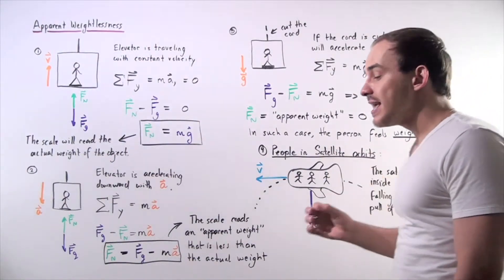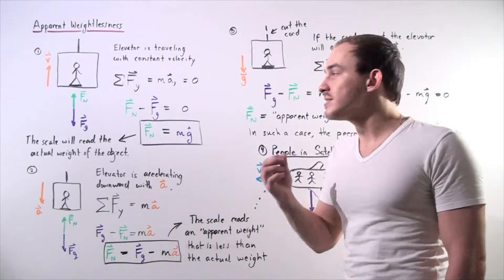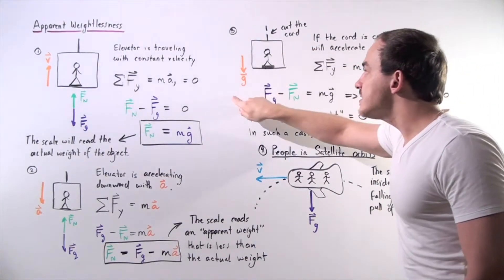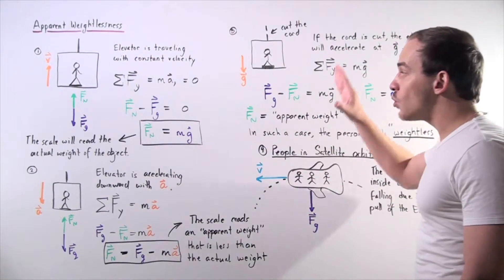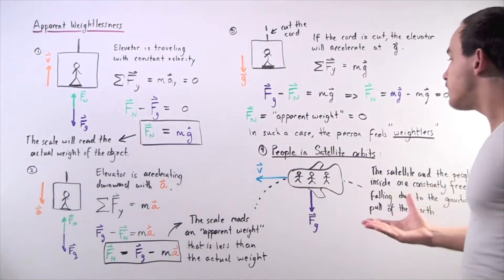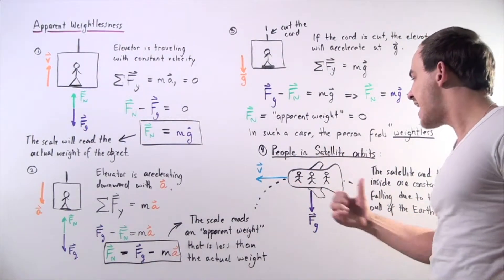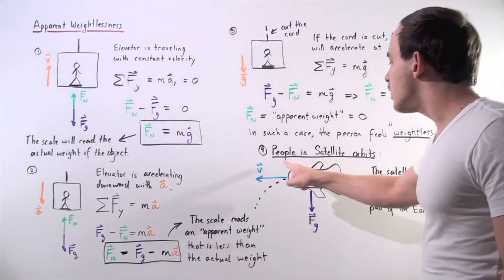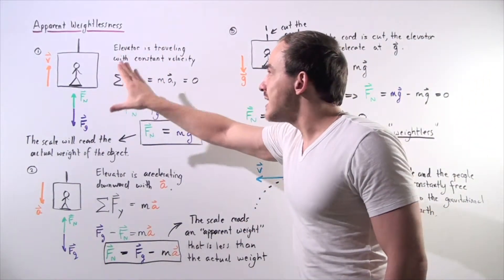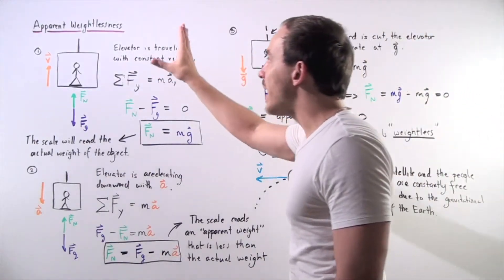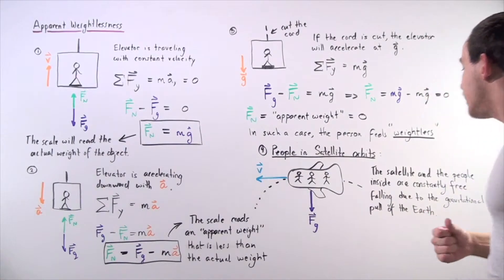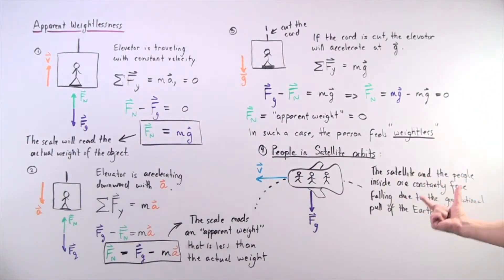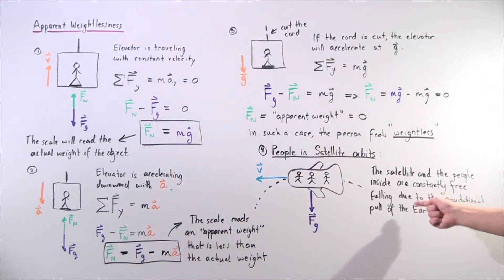What is actually taking place is that the gravitational pull is still there. Because gravity is still present, it is pulling the elevator, the scale, and the person at the same exact rate, causing the person to feel apparent weightlessness. In reality, the person still has a weight of m times g. This same apparent weightlessness applies to people inside a satellite or space shuttle orbiting Earth, which is also constantly free falling due to Earth's gravitational pull.